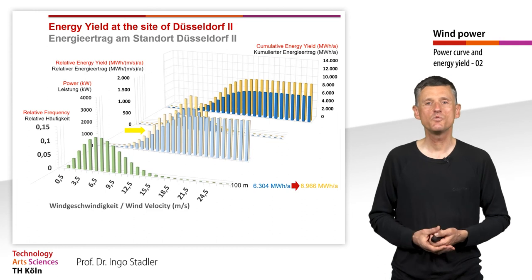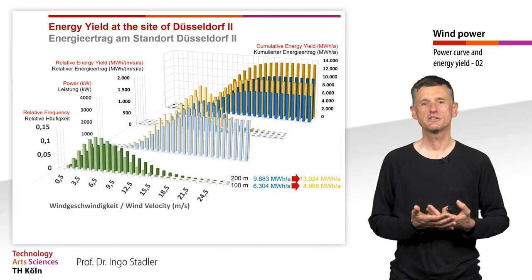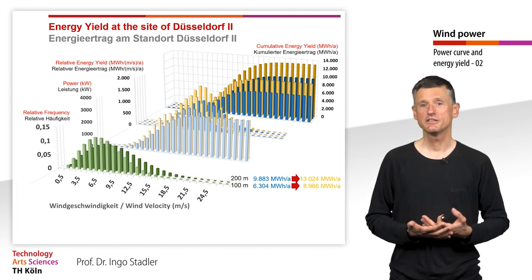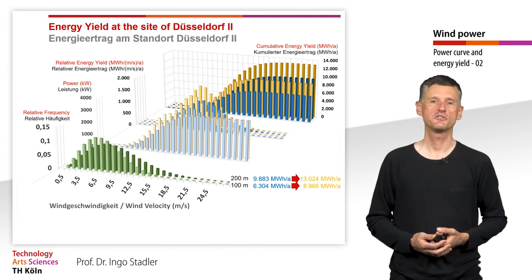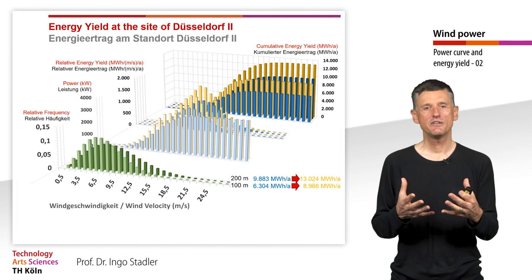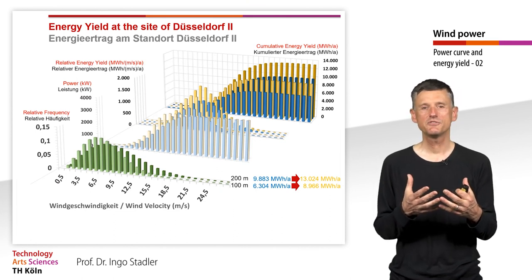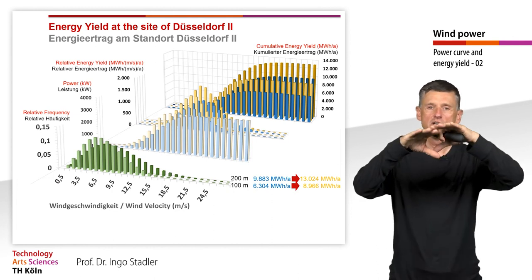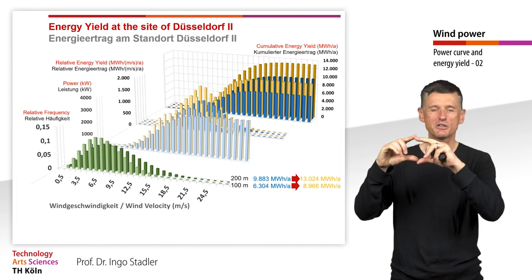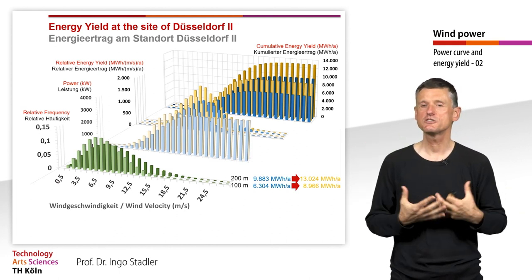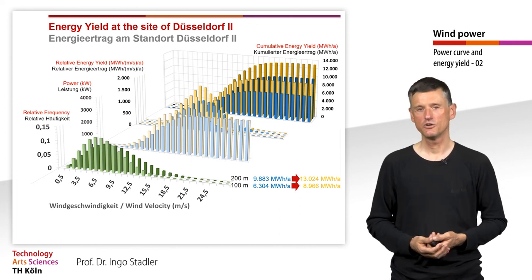The same comparison at 200 meters shows a significant difference, going from more than 9,000 to more than 13,000 MWh per year. This is why inland wind turbines use a different, higher ratio of rotor plate area to nominal generator capacity compared to turbines at coastal locations.